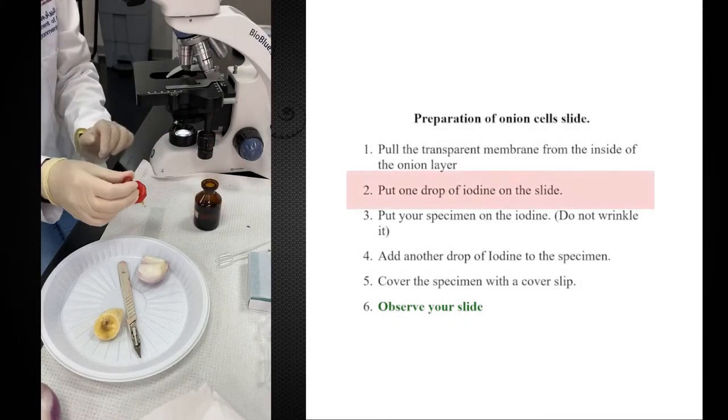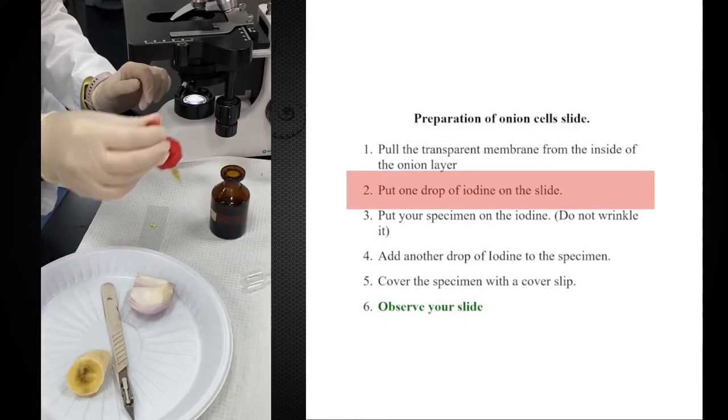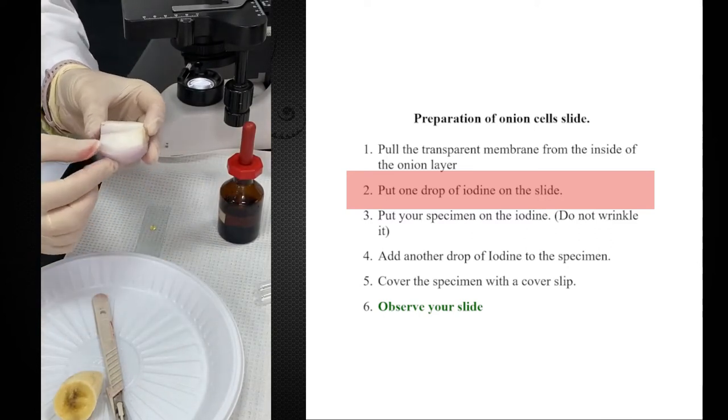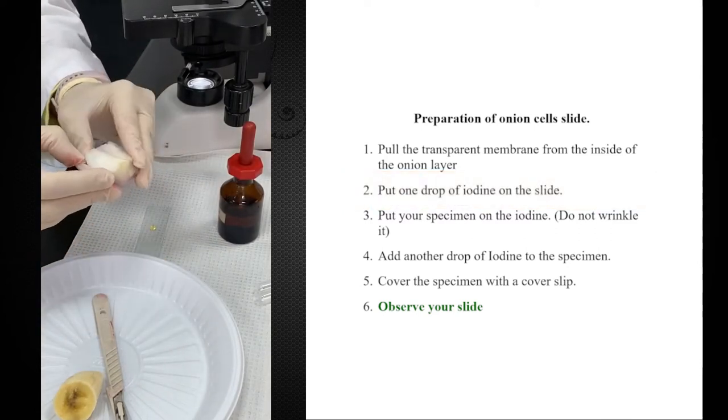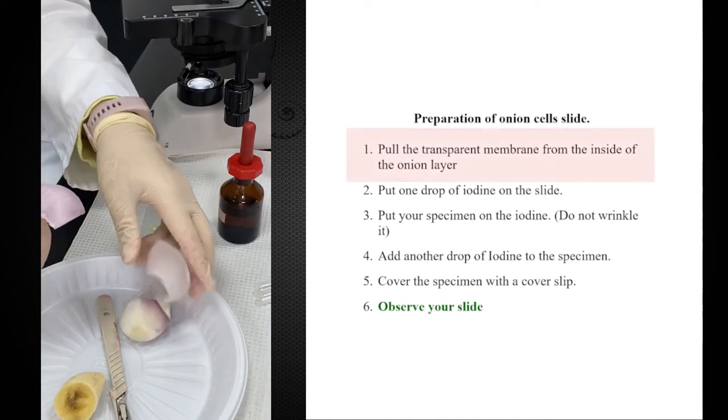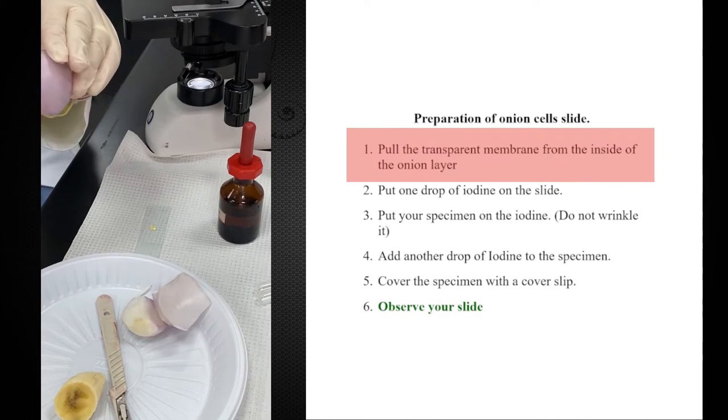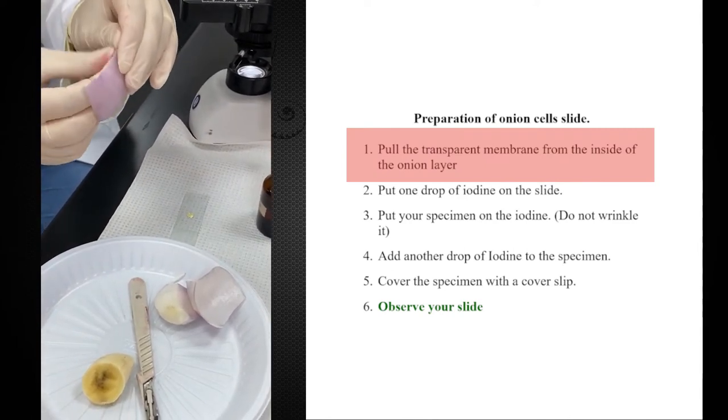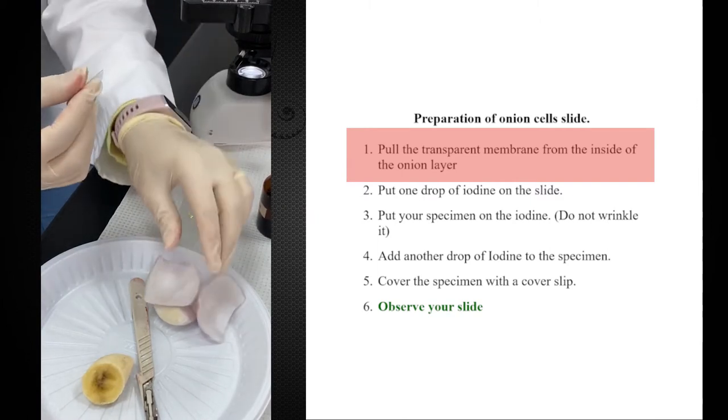To prepare an onion slide, I'm going to use iodine to give the nucleus some color. I will skip the first layer of onion and take from the second layer. I will take from the white side. You can take from the purple side; it will show colorful cells, but I want to show the nucleus, so I take skin from the non-colorful side.